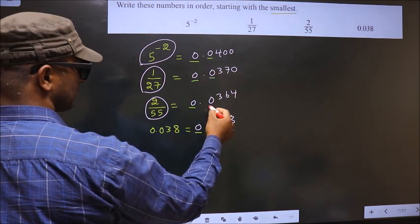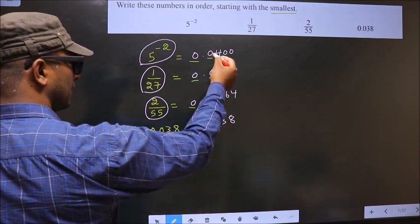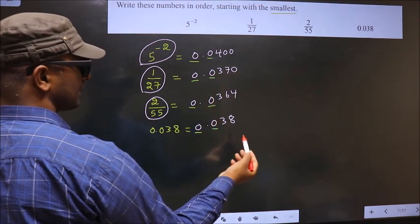Here also 0, here also 0, here also 0. Everywhere 0, so we cannot decide the smallest one.